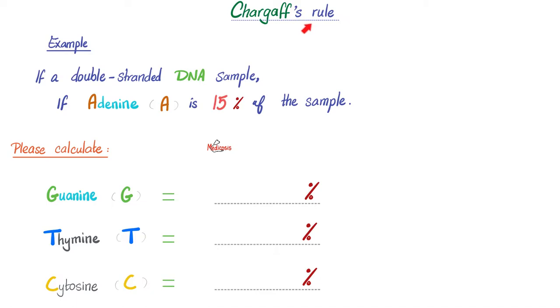Don't believe me? Consider this example. If a double-stranded DNA sample has adenine constituting 10% of that sample, how much is the guanine? How much is the thymine? How much is the cytosine? Please pause, bring a piece of paper, and try to do it on your own. Let's do it together.